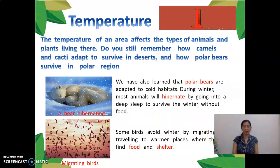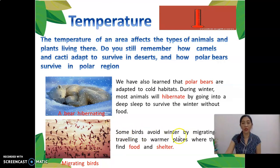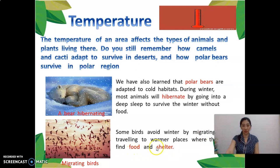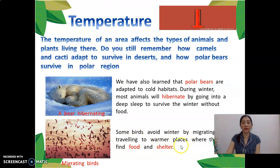Number two is migrating birds. Some birds avoid winter by migrating, or traveling to warmer places where they can find food and shelter. These migrating birds travel to warmer places to find food and shelter.